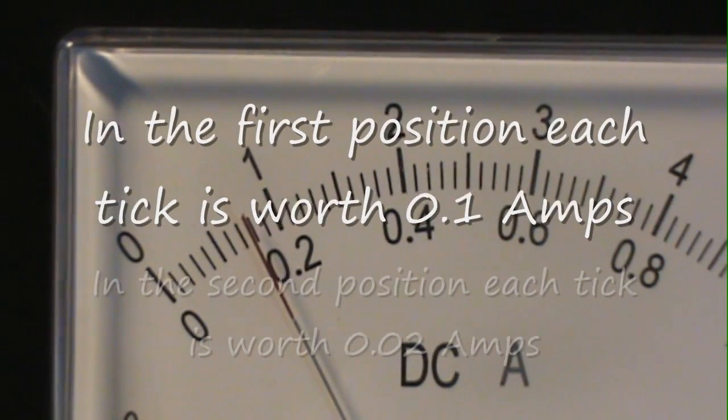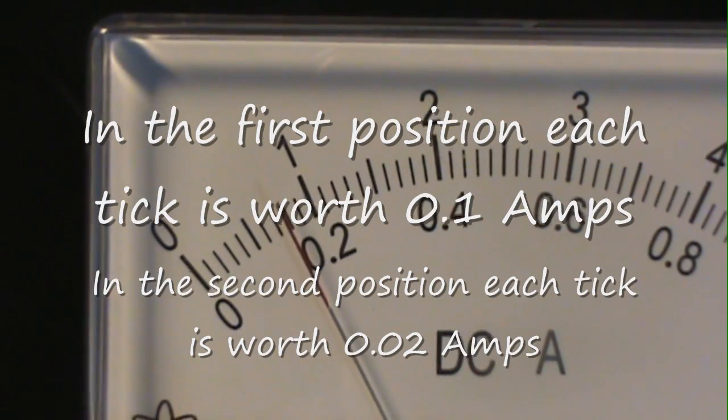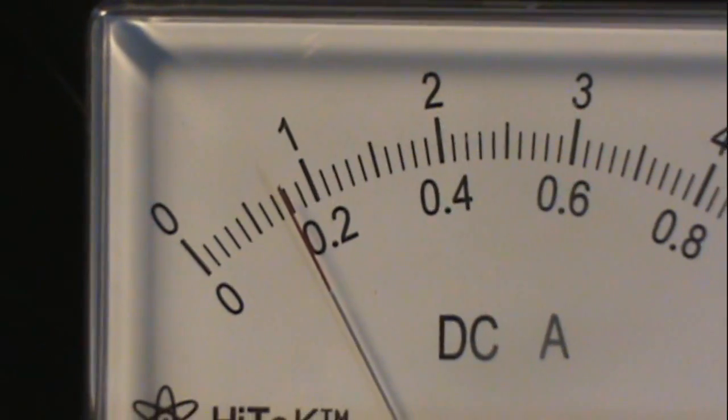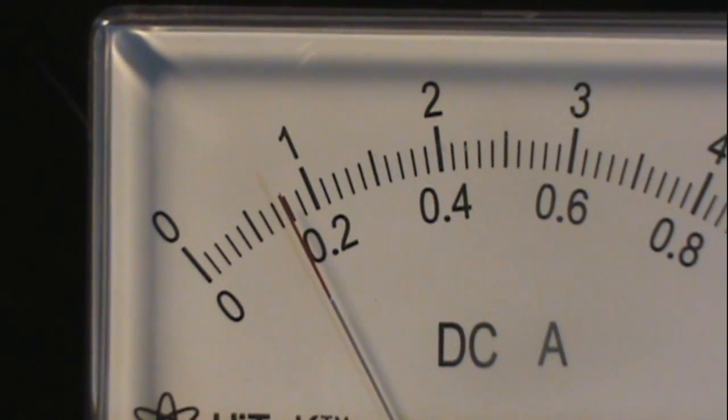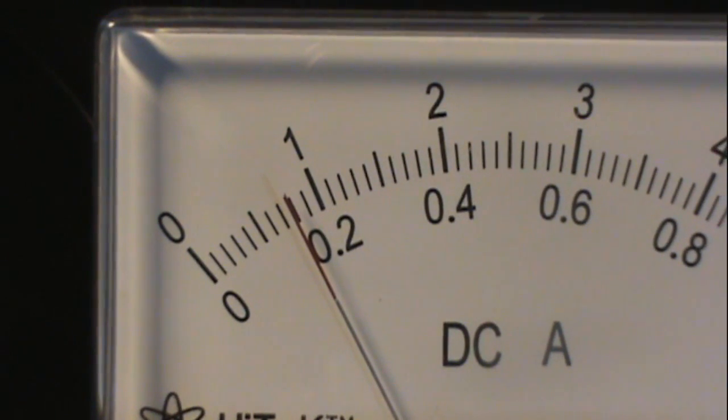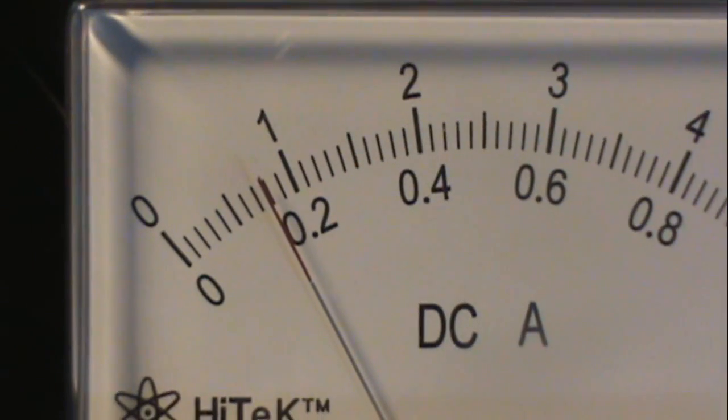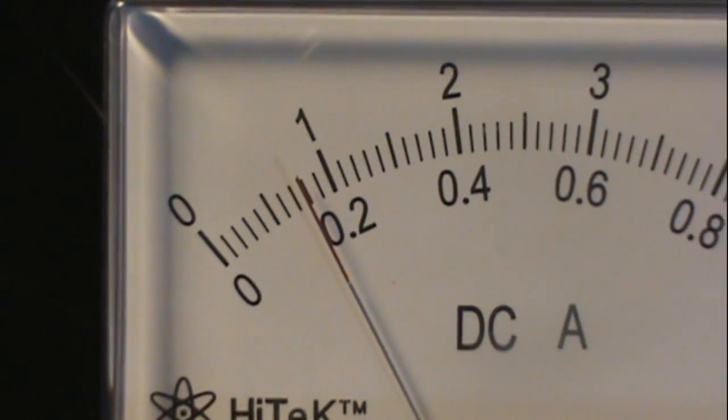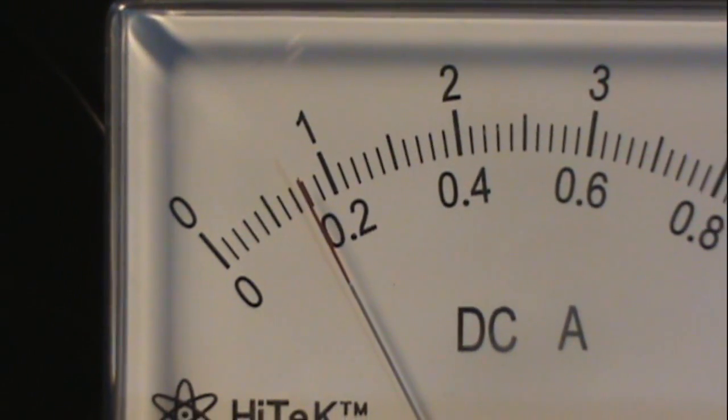The large division is from 0 to 0.2, which makes the intermediate sized division 0.1, and each of the small ticks 0.02 amps. This is a much more reasonable thing to attempt to read.